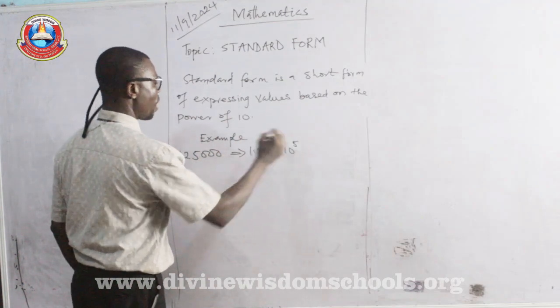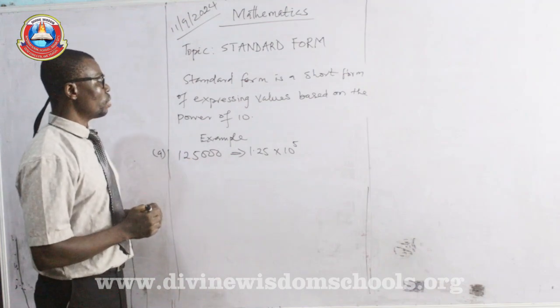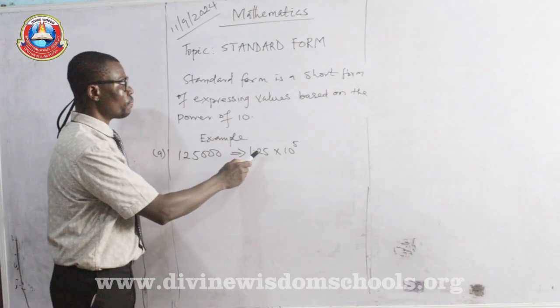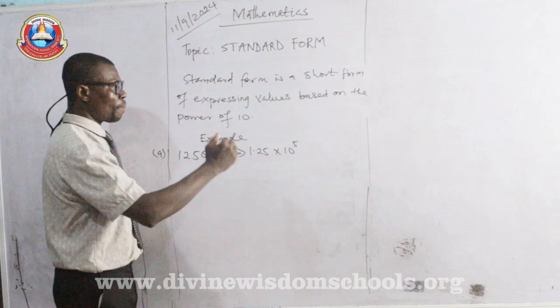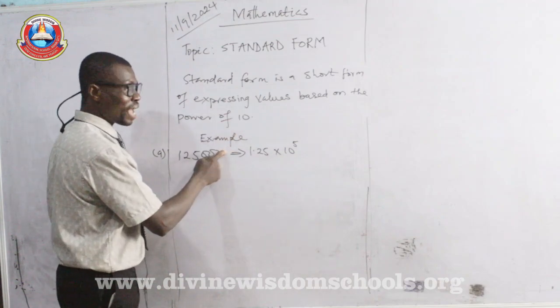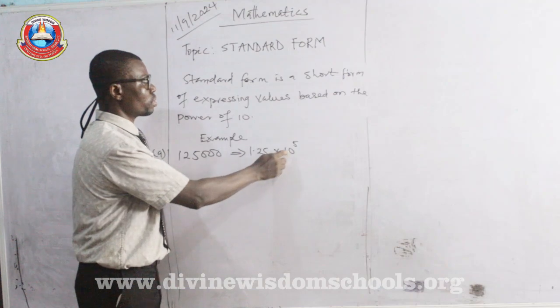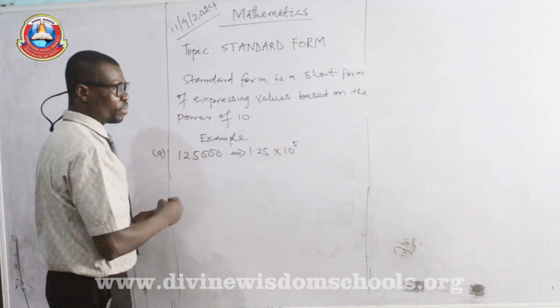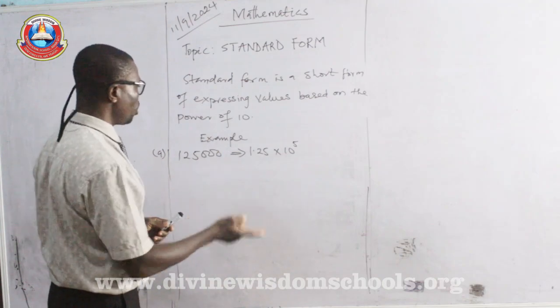So, it becomes 5. That means, 1, 2, 5, 0, 0, 0 is expressed in Standard Form as 1.25 times 10 raised to the power of 5. Take note, this time, you shifted the decimal point from the right-hand side to the left. Hence, the power of 10 is positive. In the case where you shifted from the left-hand side to the right-hand side, it becomes negative.